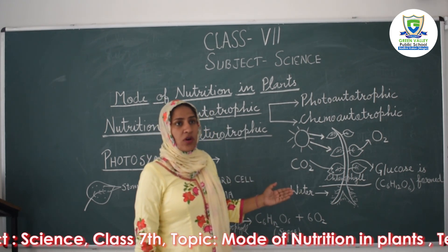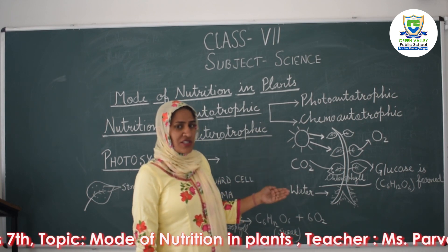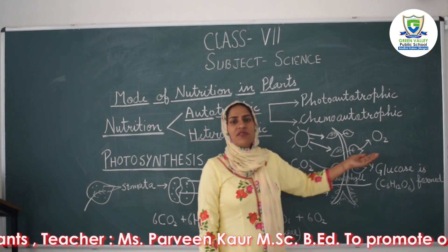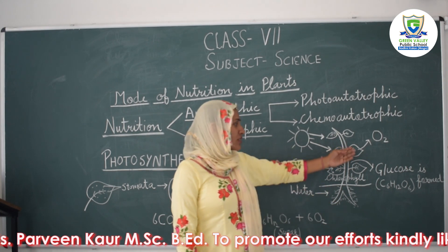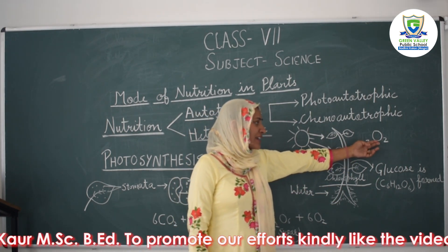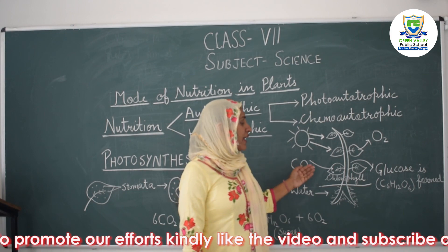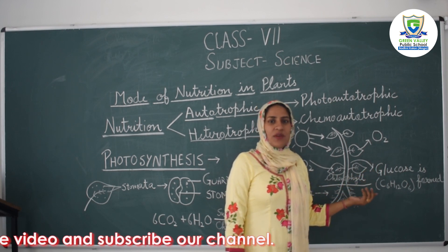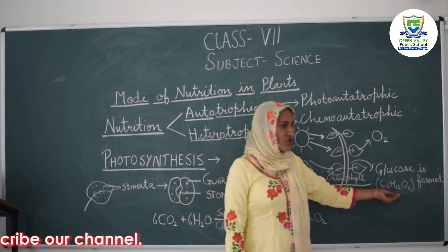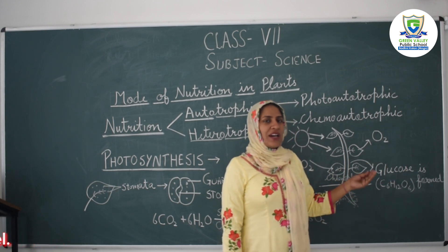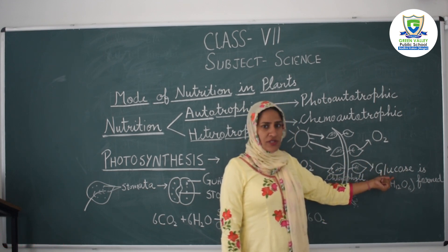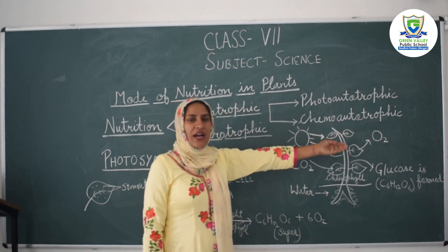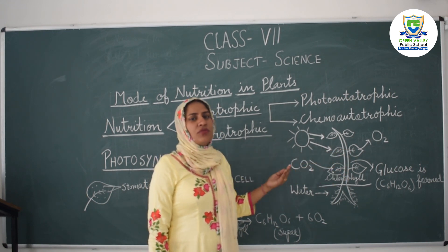At the end of photosynthesis we get oxygen — this is the oxygen that plants give us. Plants make their food in the form of glucose, which is a type of sugar: C6H12O6. Along with glucose, oxygen is produced as a byproduct, meaning a waste product.